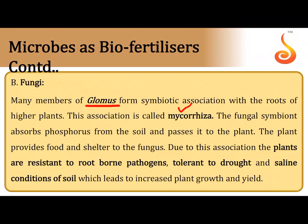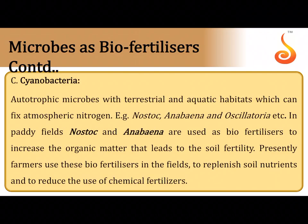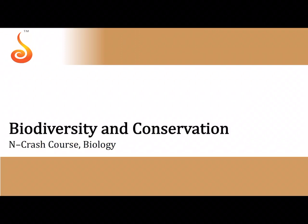Mycorrhiza absorbs phosphorus, water, and mineral ions for the root, while the plant provides carbohydrates and shelter to the fungus. Because of this mycorrhizal association, the plant becomes resistant to root-borne pathogens, tolerant to drought, and tolerant to extreme saline soil conditions. Commonly used cyanobacteria include Nostoc, Anabaena, and Oscillatoria, mostly used in rice/paddy fields, where they increase organic content, enhance soil fertility, and improve the quality and quantity of yield.